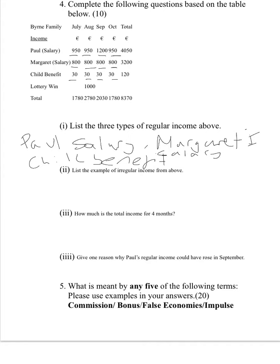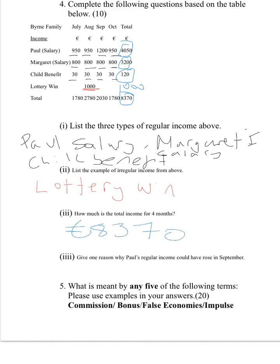Question two asks us to list the example of an irregular income. What income doesn't happen on a regular basis? That would be the lottery win. The next question asks how much is the total income for the four months. We go to our total column — adding the four totals gives a final figure of 8,370. So our total for the four months is 8,370.